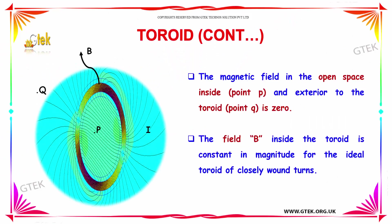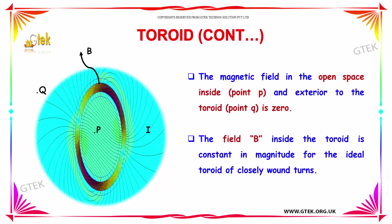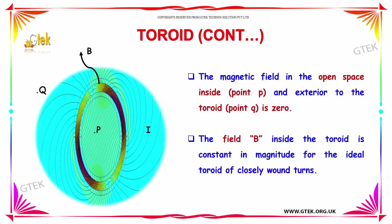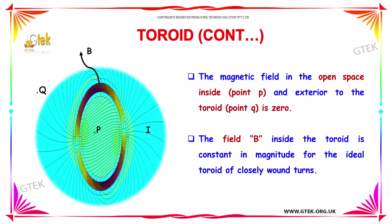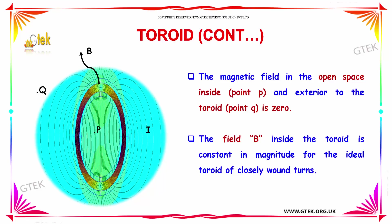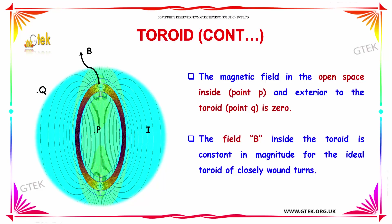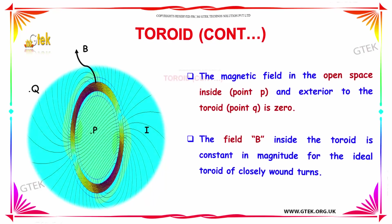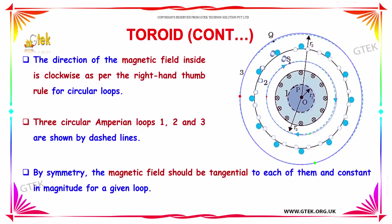The magnetic field in the open space inside at point P, and exterior to the toroid at point Q, is zero. The field B inside the toroid is constant in magnitude for the ideal toroid of closely-wound turns. The direction of the magnetic field inside is clockwise.